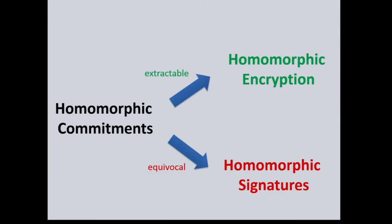This commitment framework explains both homomorphic encryption and homomorphic signatures. With the extractable version — a trapdoor that lets you decrypt — you get fully homomorphic encryption. With the equivocal mode, you get signatures. There's a nice property that the commitment can be set up in either mode and you can't tell the difference. We have applications of each mode separately, but not yet an application that uses the same commitment working in either mode.